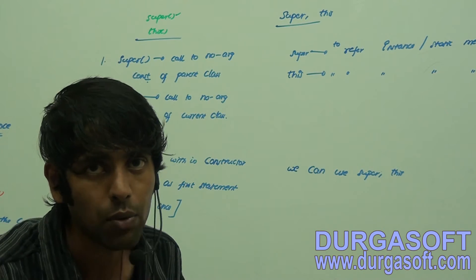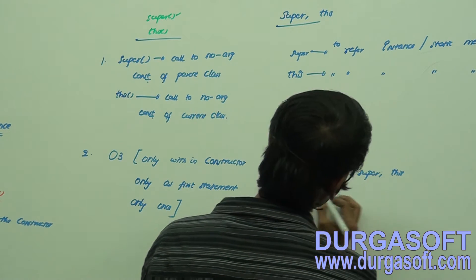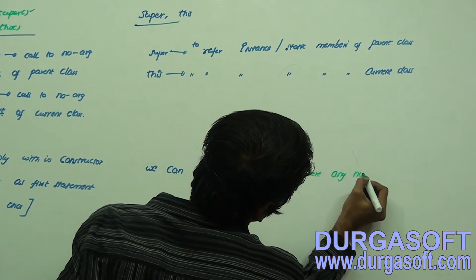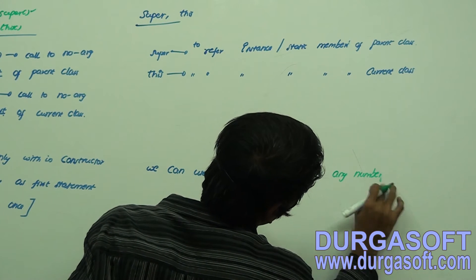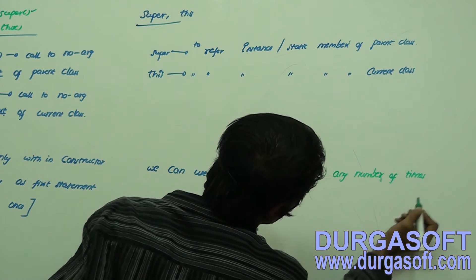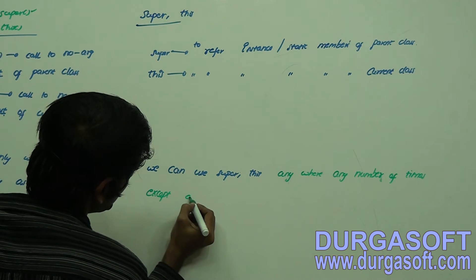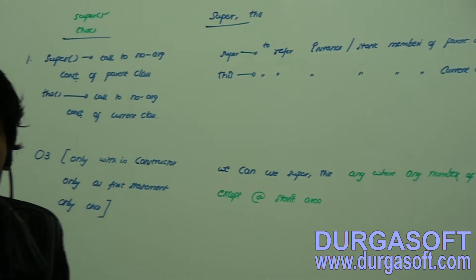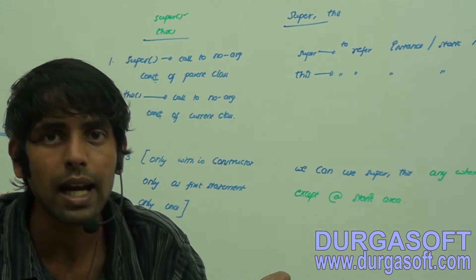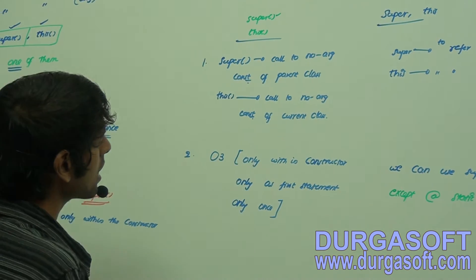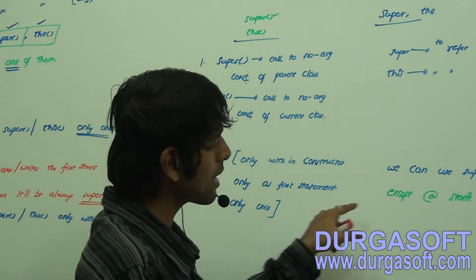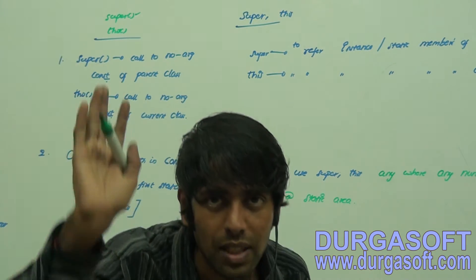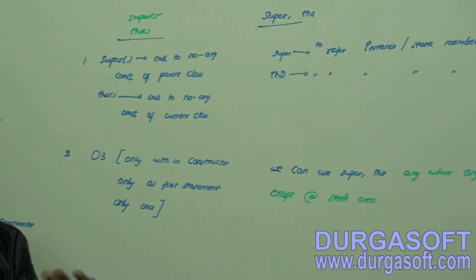Super and this can be used anywhere, any number of times, except in static areas — otherwise you will get a compile-time error: 'non-static variable cannot be referenced from a static context.' So: super() and this() — only within the constructor, only first statement, only once. Super and this keywords — anywhere within the class except static area, any number of times.